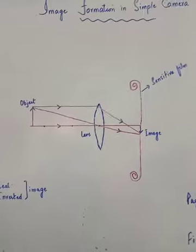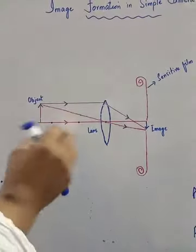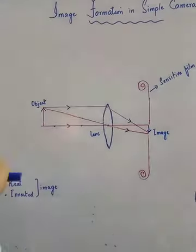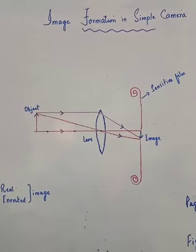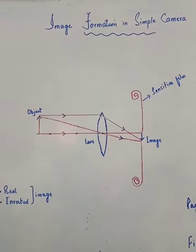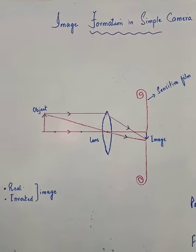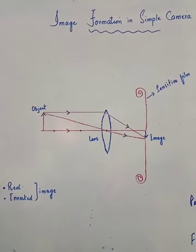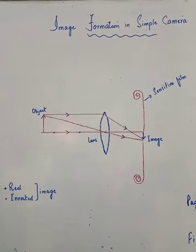There is a shutter behind the lens that remains closed normally. When we press the button, it will open and light comes from that and we can take the image. When the button is pressed, the shutter opens for a while. Light coming from the object enters the camera during this interval and an image is formed on the film. The amount of light entering into the camera depends upon the size of the aperture.